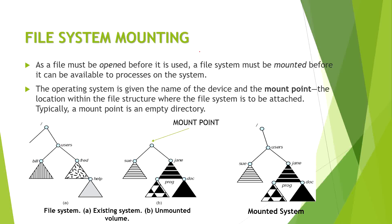If we want to access any file, we first have to add that file to the system. That adding procedure is called mounting. A file system must be mounted before it is used — it is the addition of a file system into our operating system. This mounting is done in some empty directory, which can be called the mounting directory or mounting point.